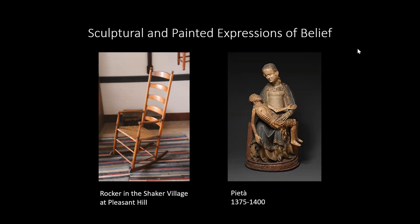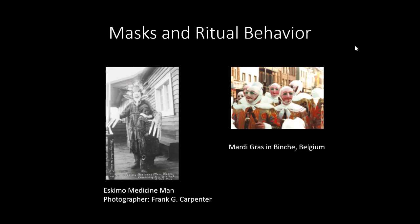Now we have masks and ritual behavior — two very different examples. An Eskimo medicine man shown from the late 19th century, apparently attempting a cure on a boy. And then Mardi Gras masks in Belgium, a rather recent photograph. In both cases, the masks allow for the transformation of the individual. The Mardi Gras masks were more of a kind of party as a prelude to Christian Lent, where identities could be exchanged or hidden. Whereas the Eskimo medicine man is channeling higher forces in order to bring them down to earth — a transformation of personality as well.